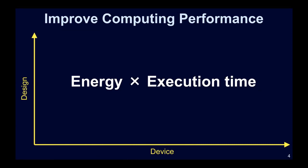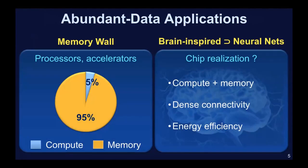Performance is very strongly connected to what applications we are targeting. The applications I will focus on are what I call abundant data applications — for example, AI on large amounts of data. This abundant data application space is relevant from the IoT edge all the way to the cloud.